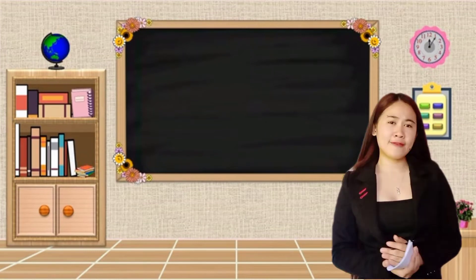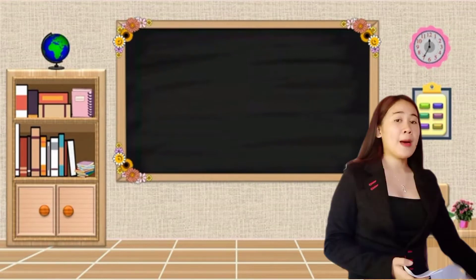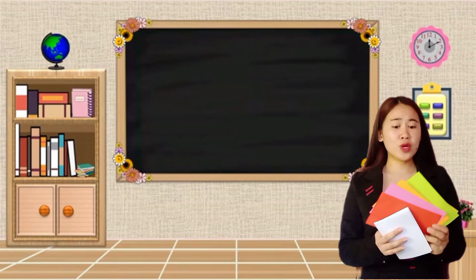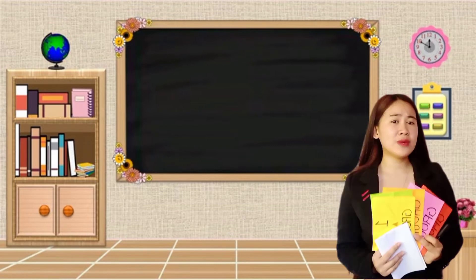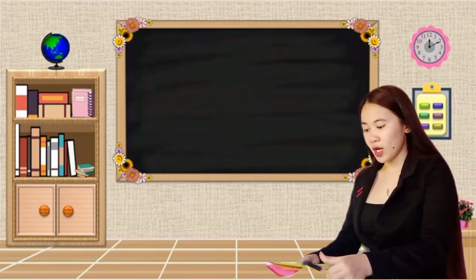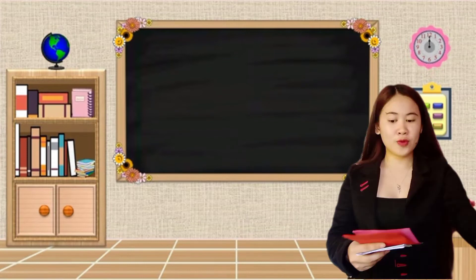So, group yourself into five groups. And I have here a puzzle of pictures. And all you have to do is to solve and identify the picture. Are we all clear? So, no questions? Okay, I'll give you two minutes to solve it. And when you're done, put it to the board. So, group one, two, three, four, and five.